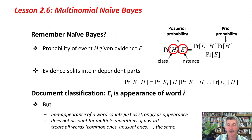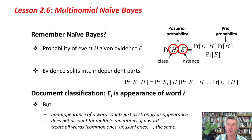There are a couple of problems here for document classification. First of all, the non-appearance of a word counts just as much in Naive Bayes as the appearance of a word, and it makes intuitive sense that the class of a document is more determined by the words that are in it than the words that aren't in it. Secondly, Naive Bayes doesn't account for the fact that a word might occur multiple times in a document — a word that occurs lots probably should have a greater influence on the class of the document than a word that only appears once. Thirdly, it treats all words the same, so the word AND or THE is treated the same as an unusual word like WEKA or BREAKFAST. That doesn't sound reasonable either.